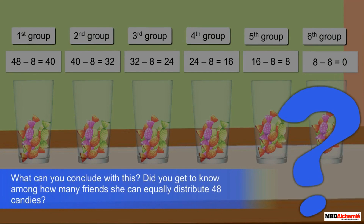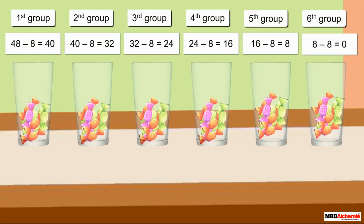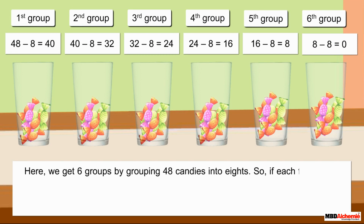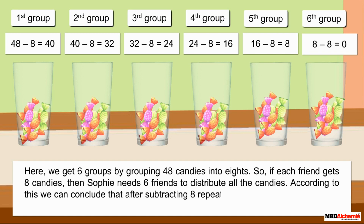What can you conclude from this? Did you get to know among how many friends she can equally distribute 48 candies? Here we get six groups by grouping 48 candies into eights. So if each friend gets eight candies, then Sophie needs six friends to distribute all the candies. We can conclude that after subtracting eight repeatedly six times from 48, we get six groups of eight.